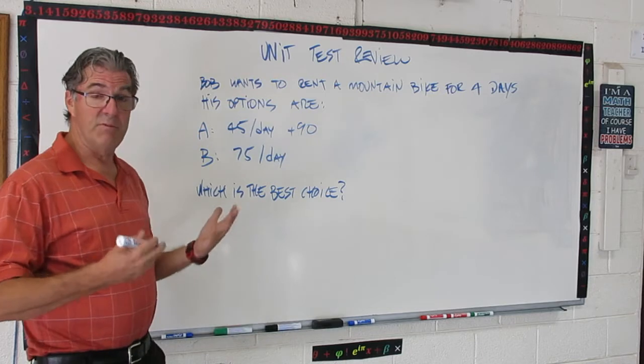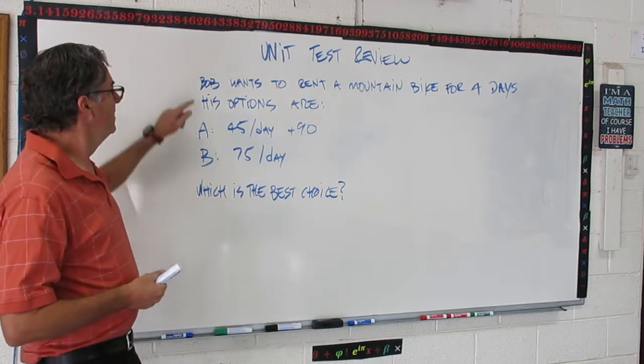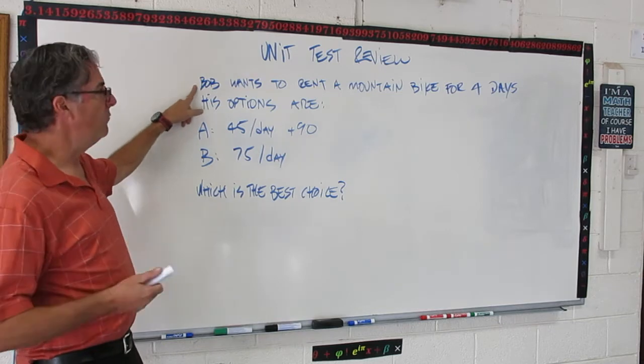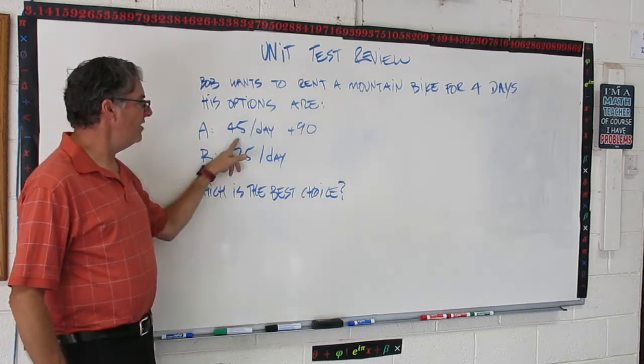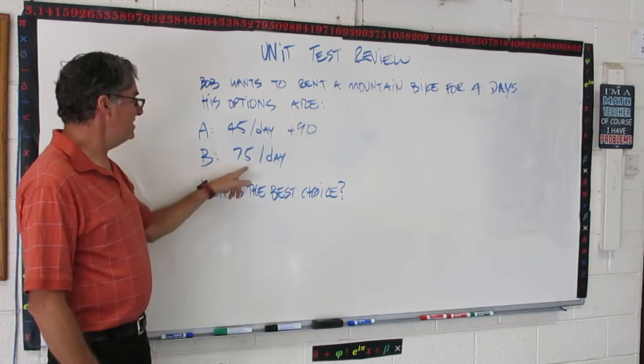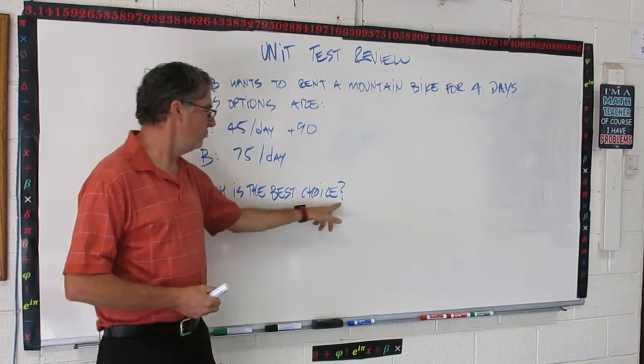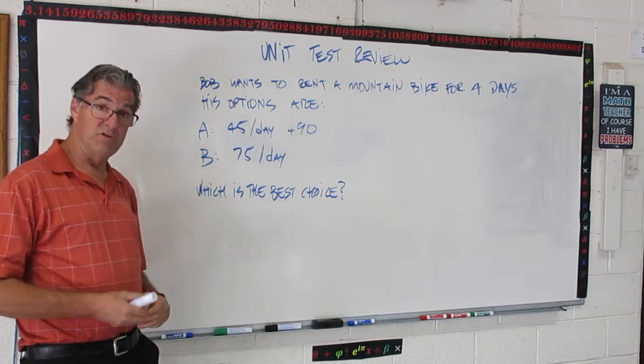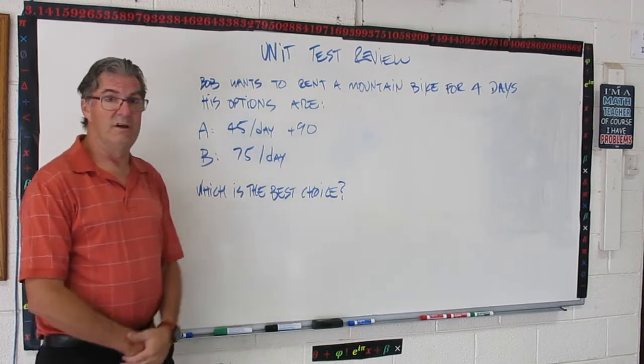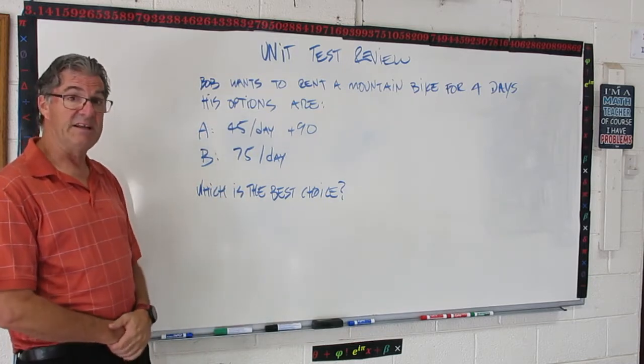So let's take a look at a word problem that deals with two different rates. We did one of these before. Bob, some dude, Bob, wants to rent a mountain bike for four days. He has two options. $45 a day plus $90 or $75 a day. Now, you can probably do this in your head and answer this question. Which is the best choice? I am going to take a more methodical approach just to make sure that we go over the equations and how to solve them and the thinking that goes behind this. Okay?